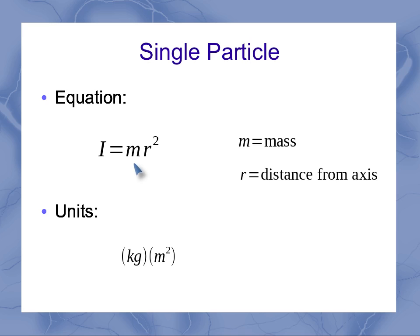Now the units for this is going to be kilograms for my mass and meters squared for the radius squared, giving me kilogram meter squared.